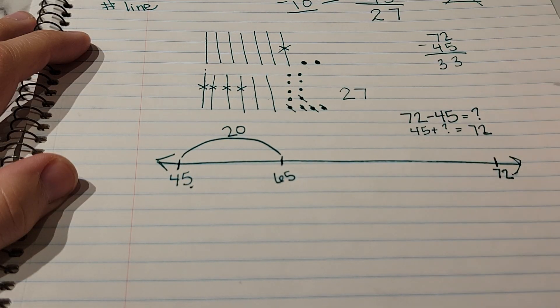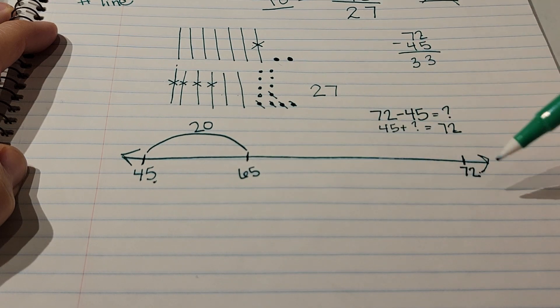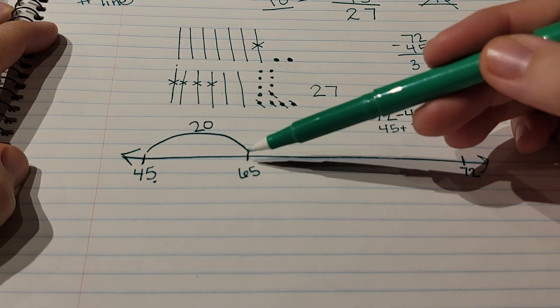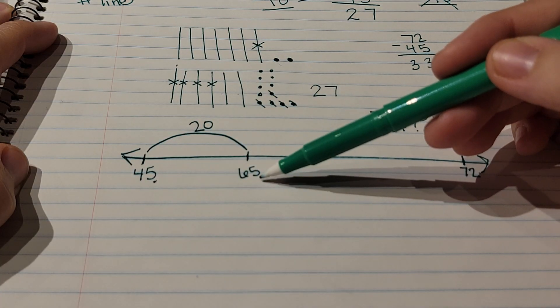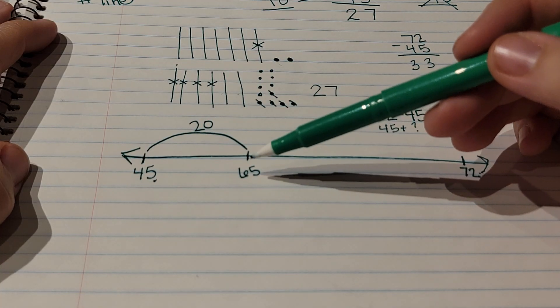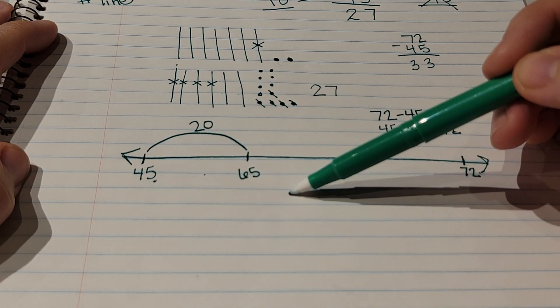And I said two jumps of 10, so that's 20, and then I landed at 65 because 45 plus two jumps of 10 is 65. Now we're still quite a ways from 72, so we need to figure out what the nearest 10 is for 65.